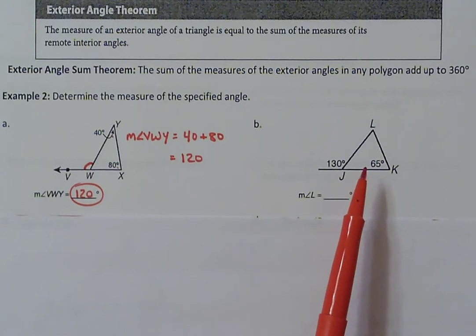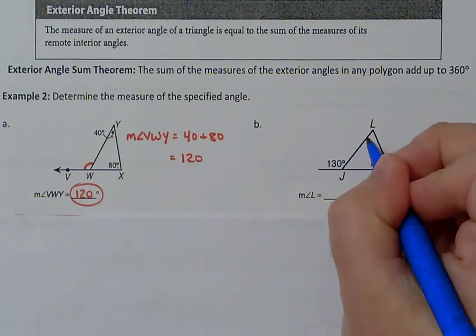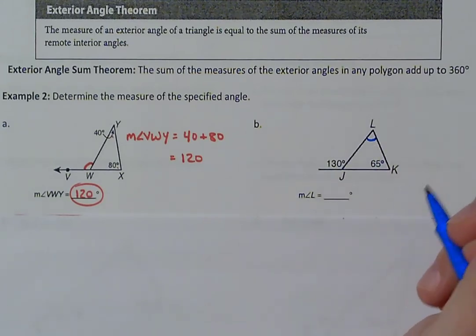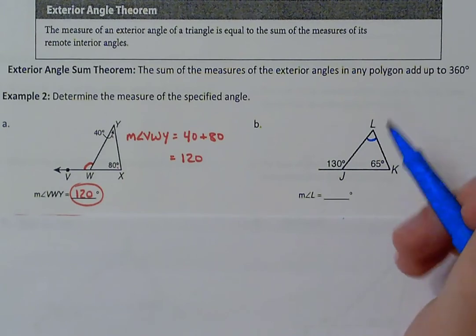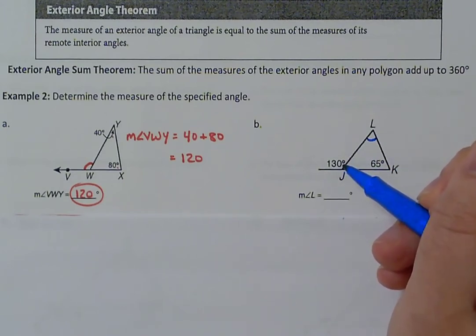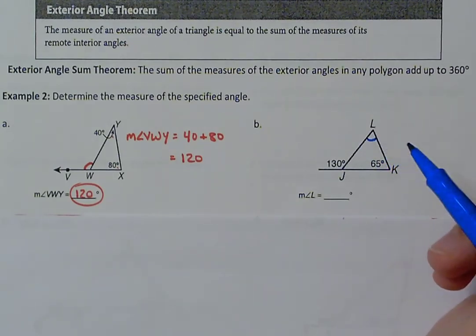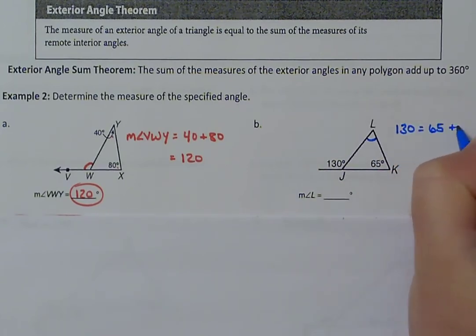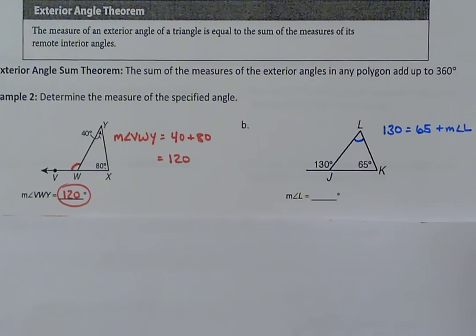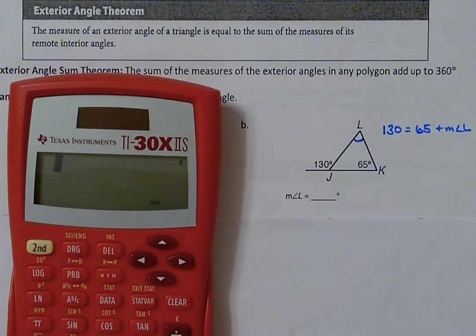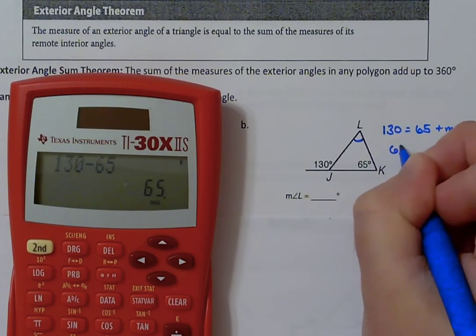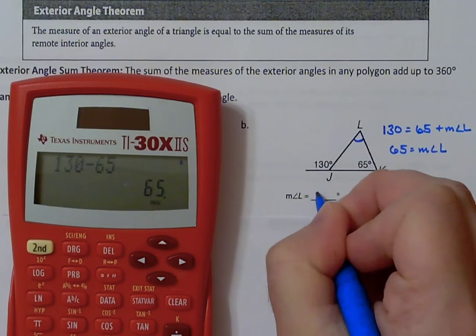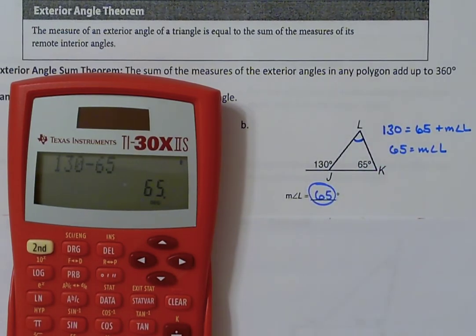For part B, they want us to find the measure of angle L, which is one of the remote interior angles. The exterior angle theorem states that 130 degrees equals 65 plus the measure of angle L. So we take 130 minus 65, and we get 65. The measure of angle L is 65 degrees.